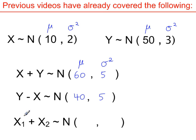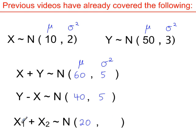When adding variables of the same type, the mean of x plus the mean of x gives 20. Each one has a variance of 2. We add the variances: 2 plus 2, to give a variance of 4.